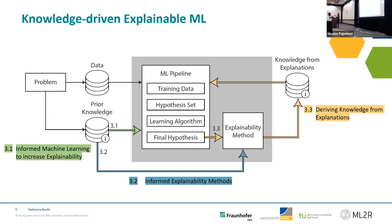The third approach is deriving knowledge from explanation: you use the explainability method to get some insight, then formalize that and integrate it back into the pipeline again.